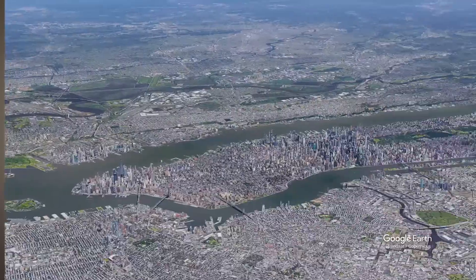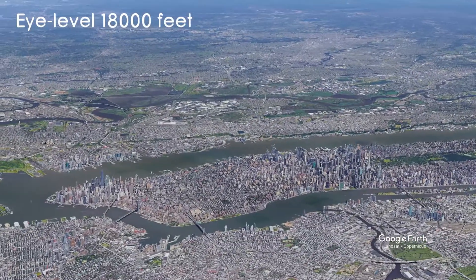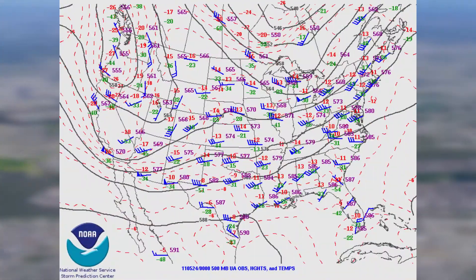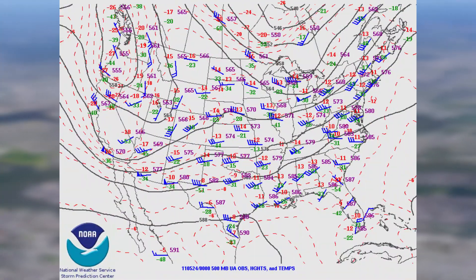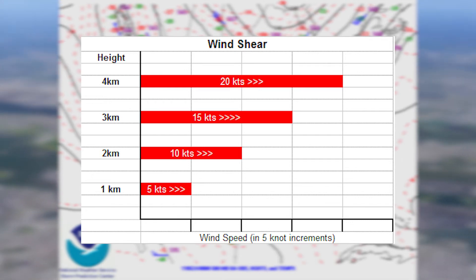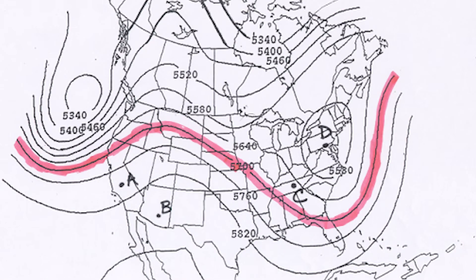The 500 millibar map is about 18,000 feet above sea level and is incredibly useful. It's great for determining wind shear, which is the turning of winds with height and a key ingredient for severe weather. You can also identify ridges and troughs: ridges are the result of warm air building up towards the poles, and troughs are the result of cold air dropping down towards the equator. You can also view vorticity, which is a measure of the local rotation of a fluid and very important for severe weather situations.